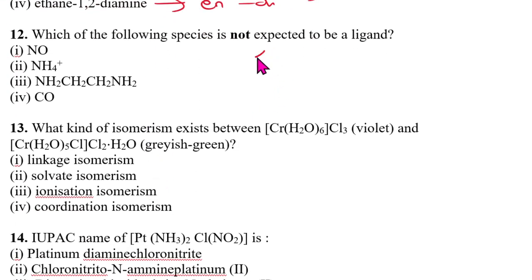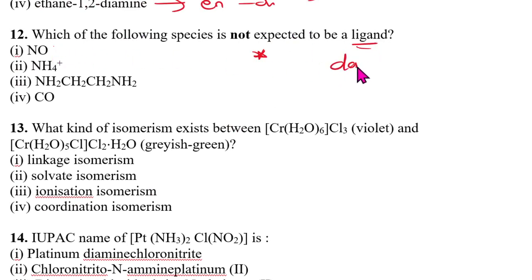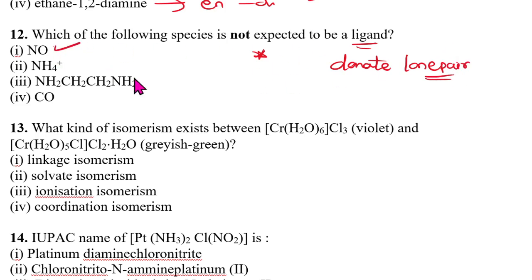Very important twelfth question: which of the following is not expected to be a ligand? A ligand must be able to donate a lone pair of electrons. NH₃, H₂O, and similar species can donate lone pairs. But NH₄⁺ (ammonium ion) has no lone pair to donate — remember, ammonium ion never acts as a ligand. That is the answer.